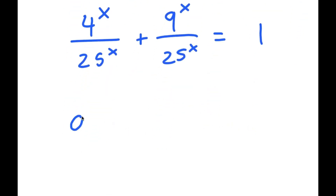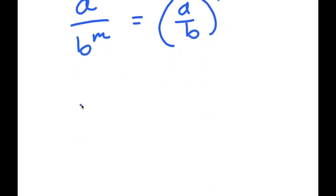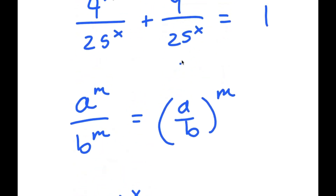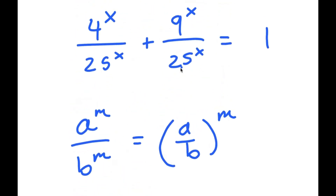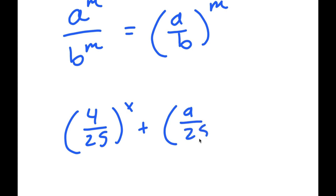Now if I have something in the form a to the power of m over b to the power of m, this is equal to a over b to the power of m. So 4 to the power of x over 25 to the power of x turns into 4 over 25 to the power of x, and 9 to the power of x over 25 to the power of x turns into 9 over 25 to the power of x.